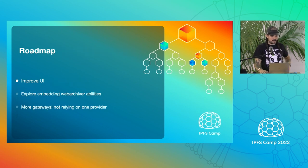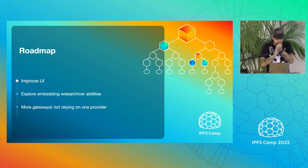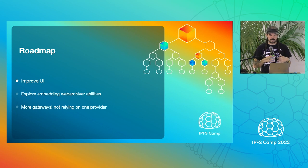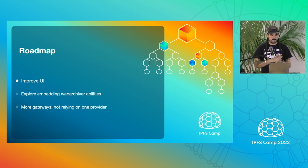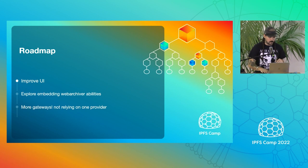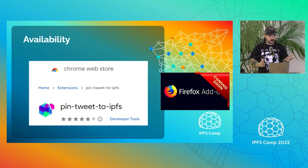The roadmap for this is simple: the extension is mostly done but we want to improve the UI. We want to explore embedding the web archiver itself into the extension. There are some restrictions around manifest V3, which is a common theme these days, so we'll see if we can find workarounds. We also want to add more gateways — upload to more gateways, possibly local nodes eventually — so we're not relying on one provider. It's now available in the Chrome Web Store and on its way to the Firefox store.